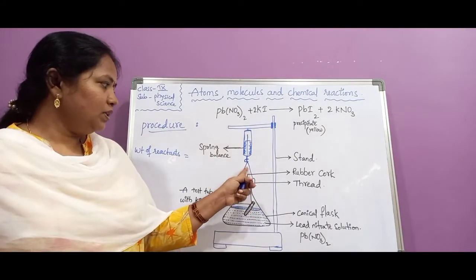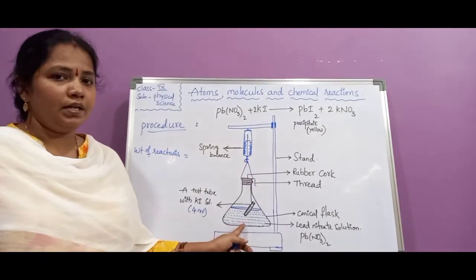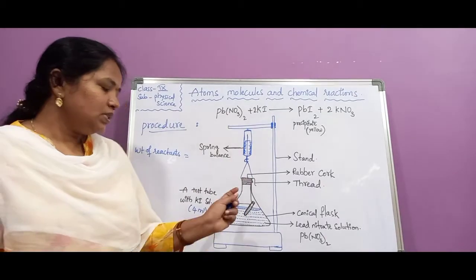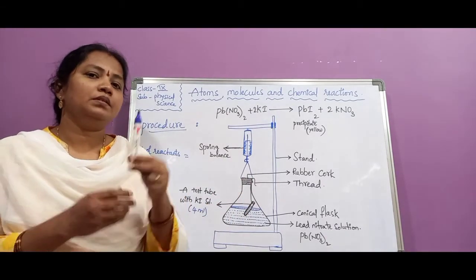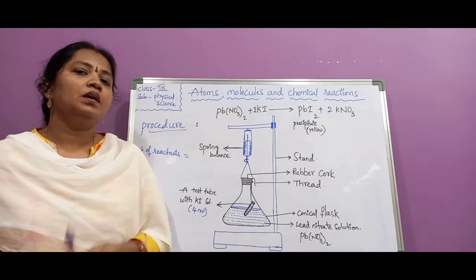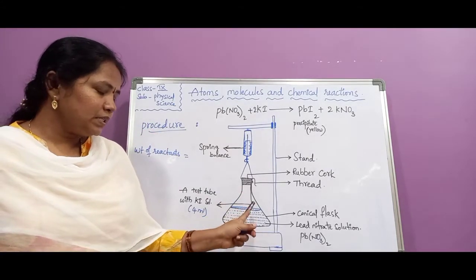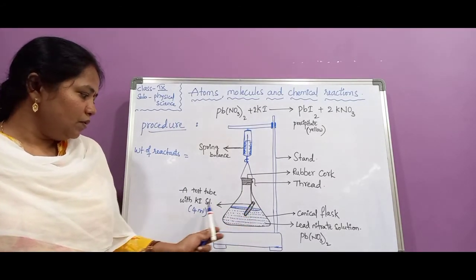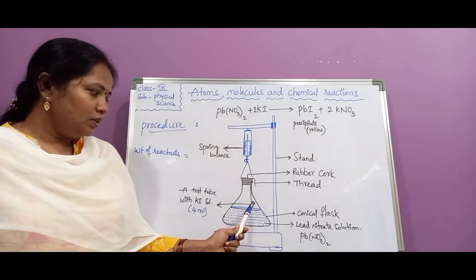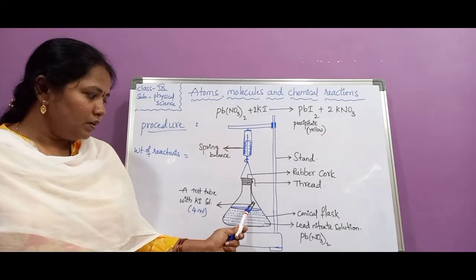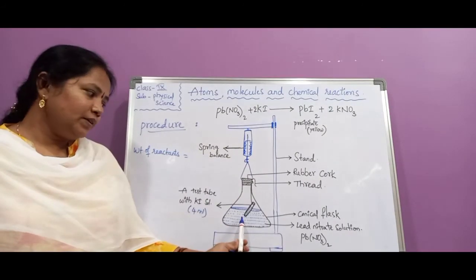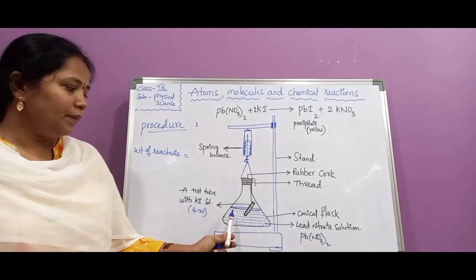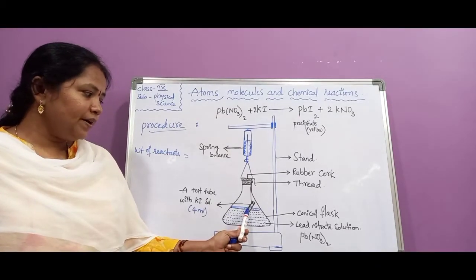After recording the weight of the conical flask and its contents, remove it from the spring balance and tilt the conical flask. When you tilt it, the potassium iodide solution present in the test tube spills into the conical flask and reacts with the lead nitrate solution present there.